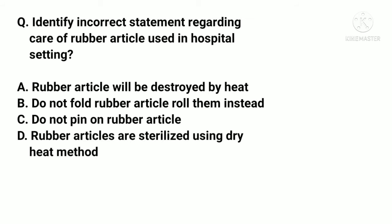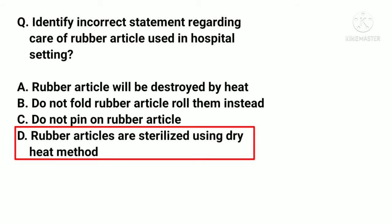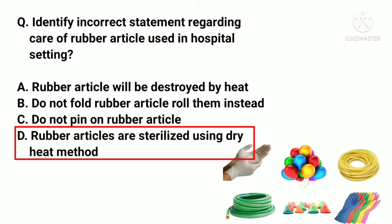The correct answer is D. Rubber articles are sterilized using dry heat method is incorrect. Rubber articles are actually sterilized by autoclaving or ethylene oxide gas method. In the autoclaving method, temperature must not exceed 130 degrees centigrade for 15 minutes.